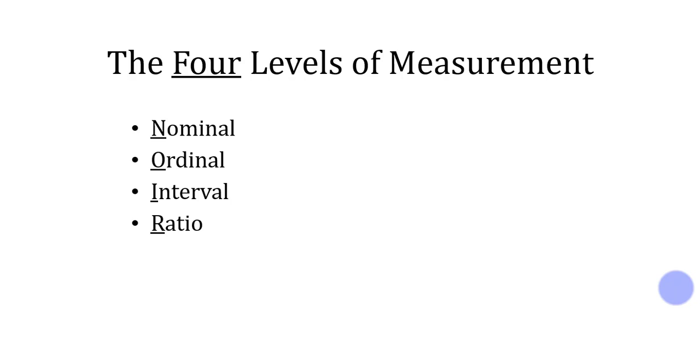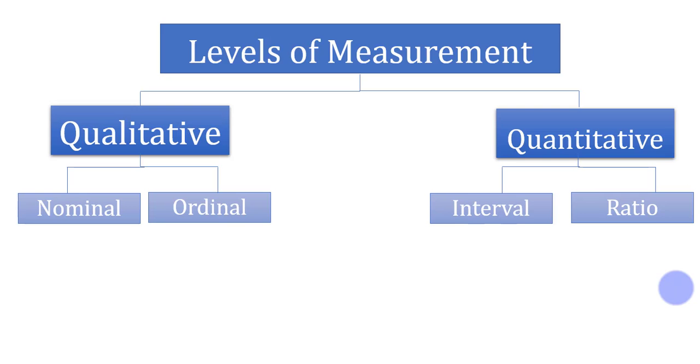In statistics, there are four levels of measurement: nominal, ordinal, interval, and ratio. These scales are further divided into two main categories, quantitative and qualitative. As you can see here, nominal and ordinal type of variables are subcategorized under qualitative category, and interval and ratio are subcategorized under quantitative category.